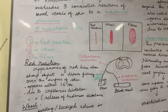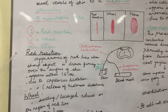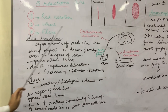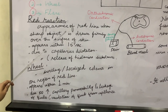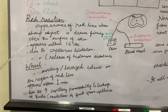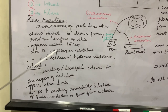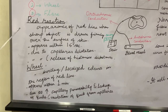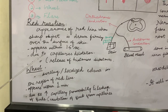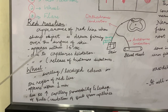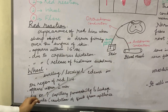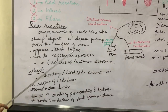The red reaction is the appearance of a red line when a sharp object is drawn firmly over the surface of the skin. It appears within 15 seconds and this reaction is due to capillary dilatation, caused by the release of histamine substances from the mast cells.